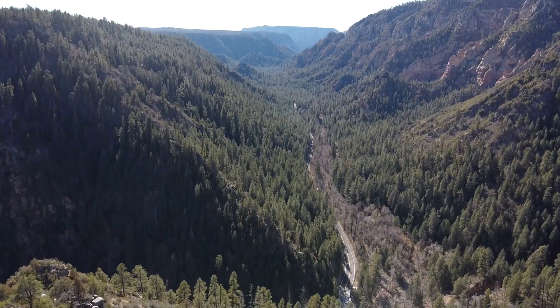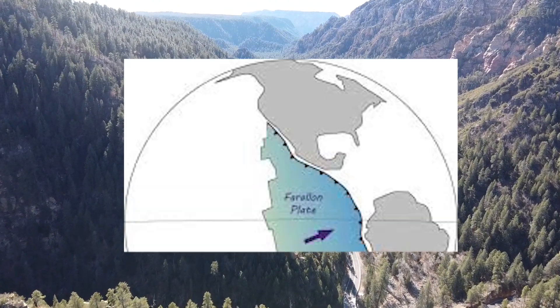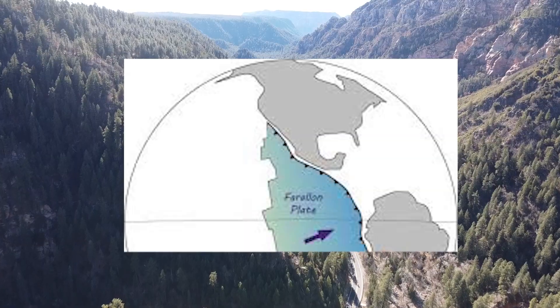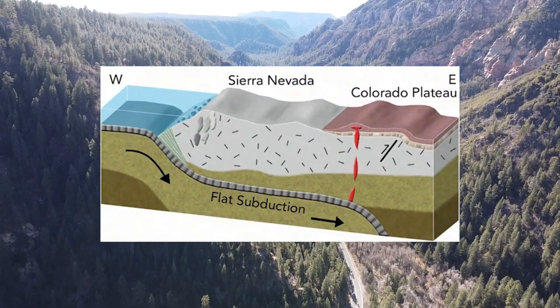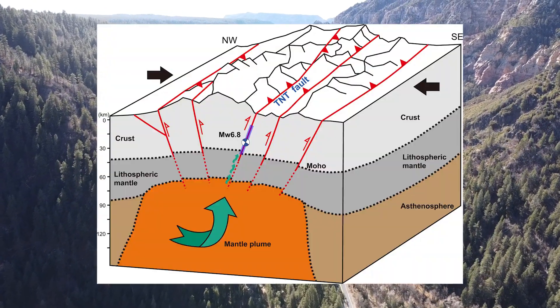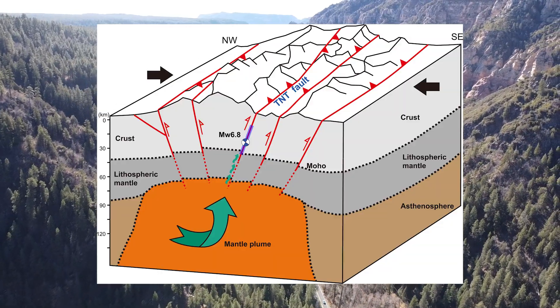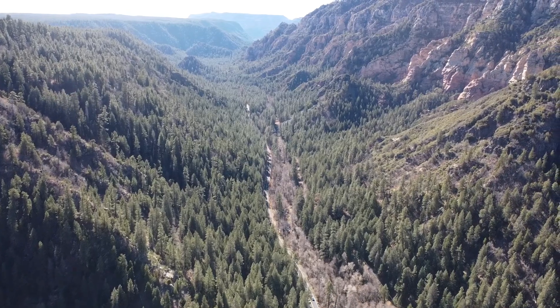So back to the Colorado Plateau. When the Farallon plate, which is now no longer present at the surface, was subducting, it created a similar mantle uplift effect like the one we were talking about with the basin and range. This uplifting force affected the Colorado Plateau differently because it's tectonically stable.